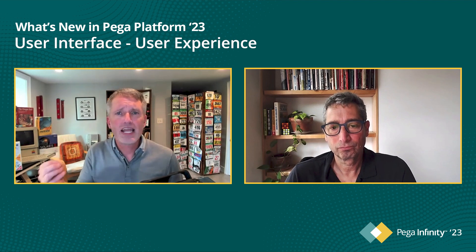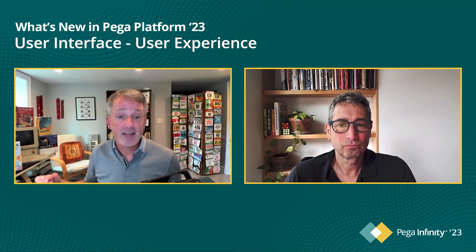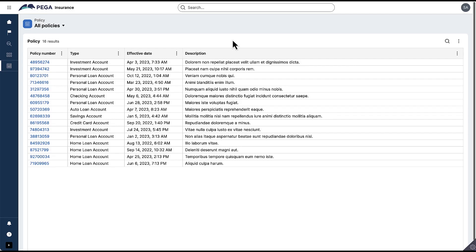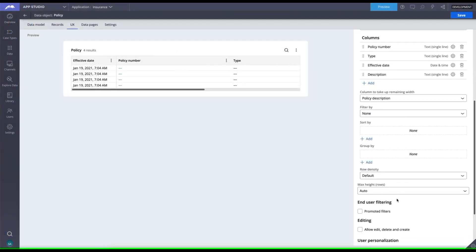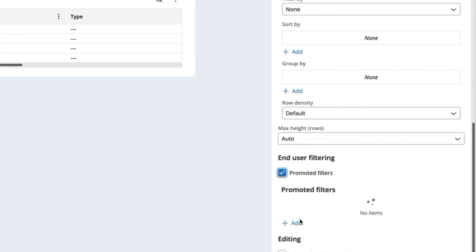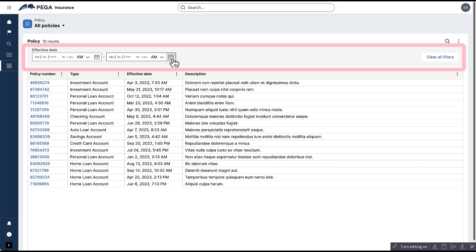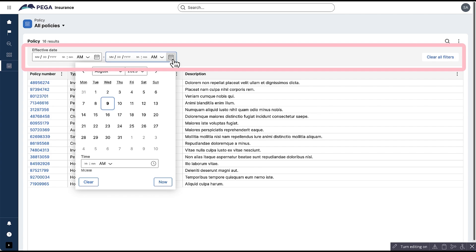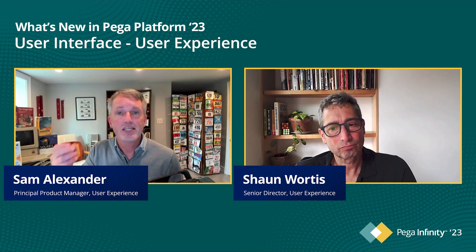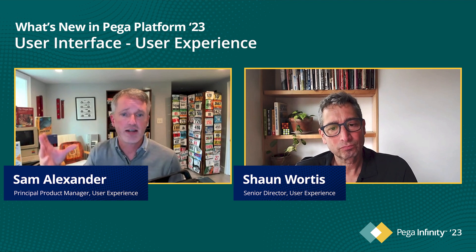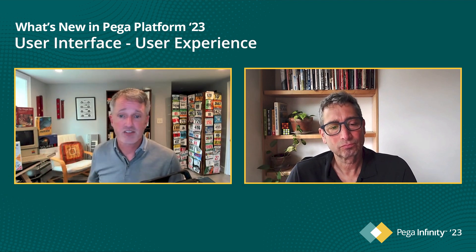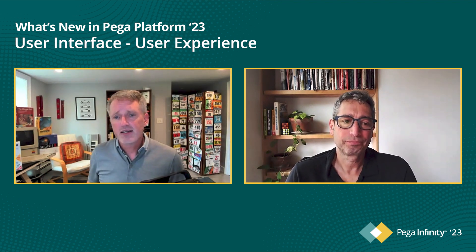What about locating records in list data? Infinity 23 includes new capabilities for that too. You can quickly configure promoted filters at the top of list data, enabling end users to quickly locate items in a list and improving their efficiency. Developers can quickly configure the most-used filters right in App Studio - the UX and the plumbing, the end-to-end experience, is generated for you. It's fast to develop and provides a consistent experience across the application stack.